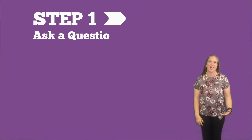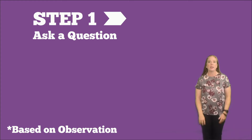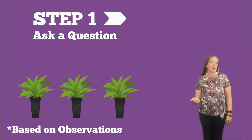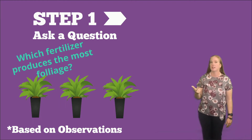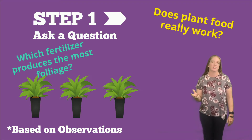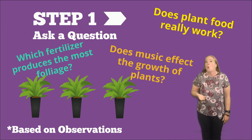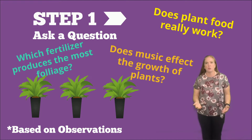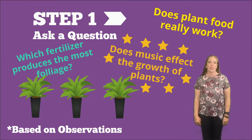Step one: ask a question. This is usually based on observations using our five senses like touch, sight, smell, taste, and hearing. Questions could be: which fertilizer produces the most foliage? Does plant food really work? Does music affect the growth of plants? Let's choose that one.